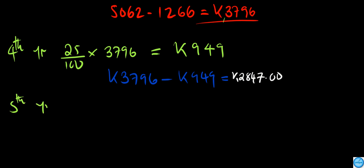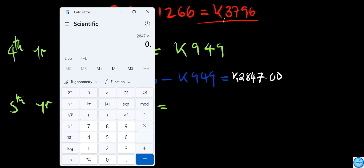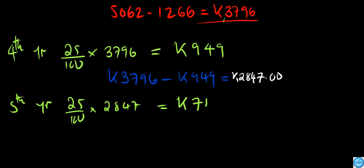In year five, we find 25% of 2,847. Multiplying 2,847 by 0.25 gives 711.75, which rounded to the nearest whole number is 712. So 712 is the depreciation in year five.